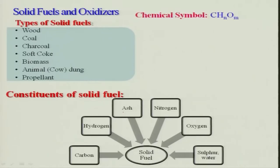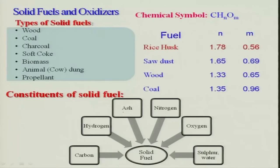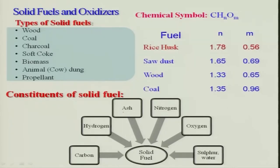It is very difficult to express a solid fuel with a single chemical formula. However, a simple model has been proposed using the notation C-H-N-O-M with empirical coefficients. For example, sawdust has values of 1.78, 0.56, and 1.65, 0.69 — these are all semi-empirical. More complex formulas also exist where nitrogen and sulfur come into the picture.